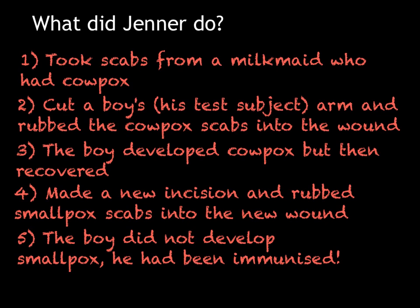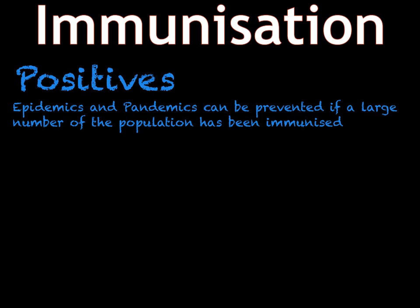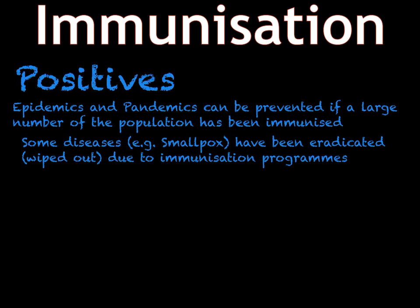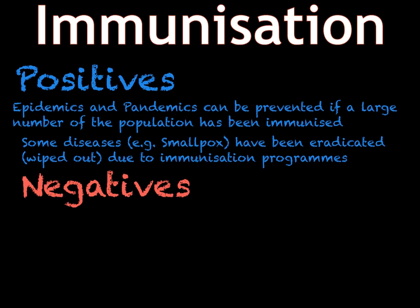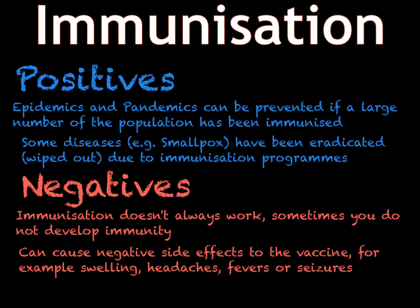Nowadays we inject dead or inactive pathogens, but the same principles of Jenner's method still apply today. Immunisation has both positives and negatives. On the positive side, big outbreaks called epidemics or pandemics can be prevented if a large percentage of the population are immunised — even unimmunised people are less likely to catch the disease because fewer people can pass it on. Also, diseases such as smallpox have been virtually wiped out by immunisation programmes. However, immunisation doesn't always work and sometimes doesn't give immunity. You can also sometimes have a bad reaction to the vaccine — such as swelling, fevers or seizures — though these bad reactions are very rare. Millions of people in the UK have a flu vaccination every year.